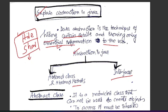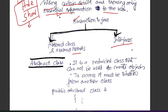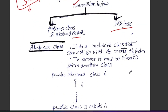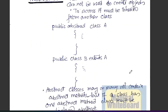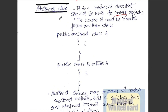In Java, we are going to use the abstract class. The abstract class is a restricted class that cannot be used to create objects. Let's look at the abstract class — it is a restricted class that cannot be used to create objects.